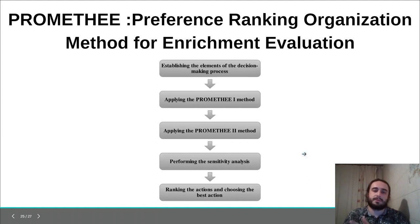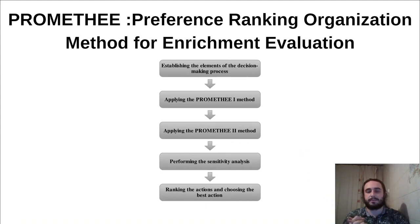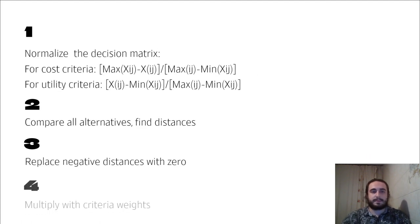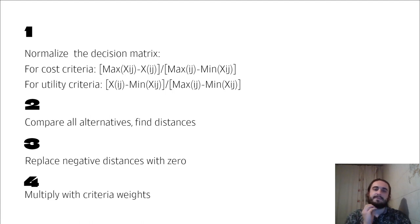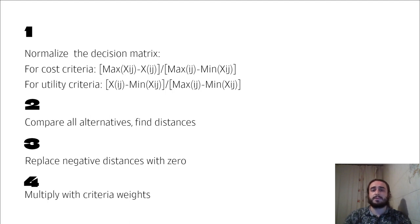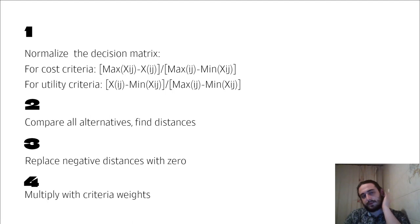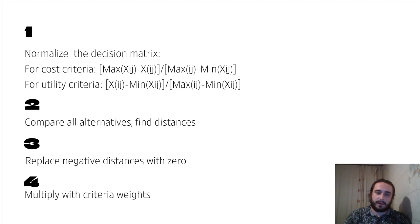Now we look at PROMETHEE. I will use one variant and skip the other — the only difference is that one uses a sum and the other uses an average. For normalization, it differs from the other methods: for cost criteria, we subtract our value from the worst and divide by the difference between worst and ideal. For benefit criteria, we subtract the minimum value and divide by the range.